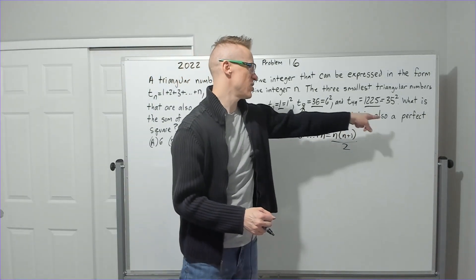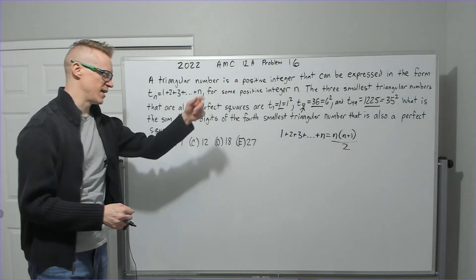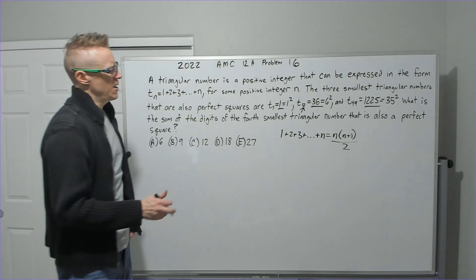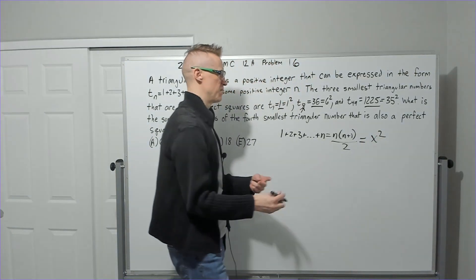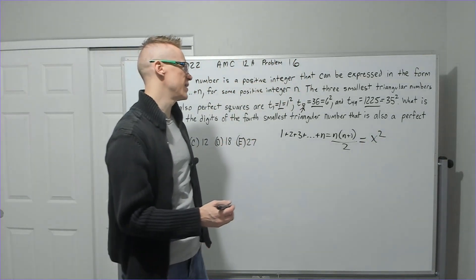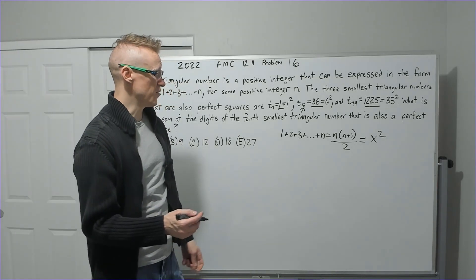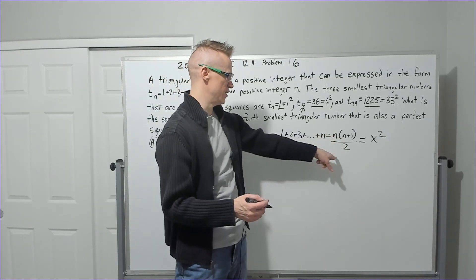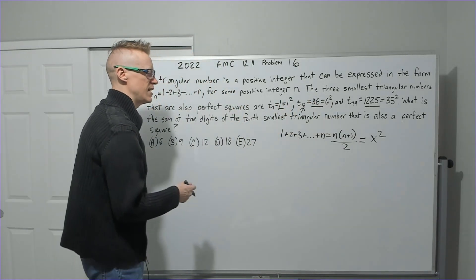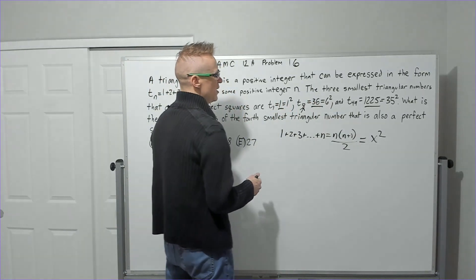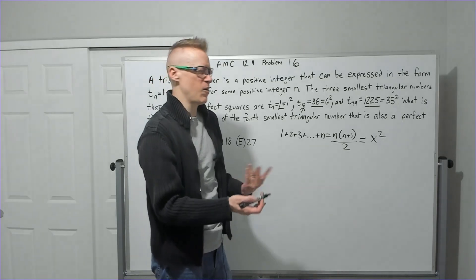You could try to set this equal to like x squared or something and play around with that. You won't probably get too far - at least I don't think. I don't see a nice path that way. So what you might do then is, okay, well where do we go if we can't do anything with that? Well, let's maybe go inspect these numbers.